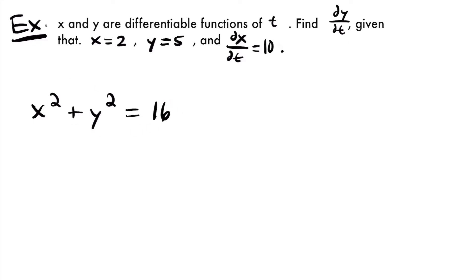The way we go about this related rates problem is we want to start by taking the derivative of both sides of this equation with respect to t, then plugging in the values we know and solving for the rate we want to find. We know x, we know y, and we know the rate at which x is changing with respect to t. So we are going to be solving for the rate at which y is changing with respect to time.